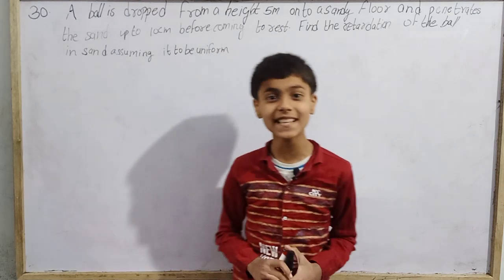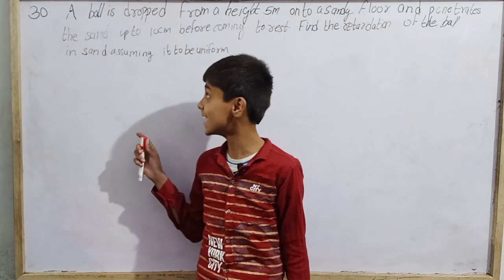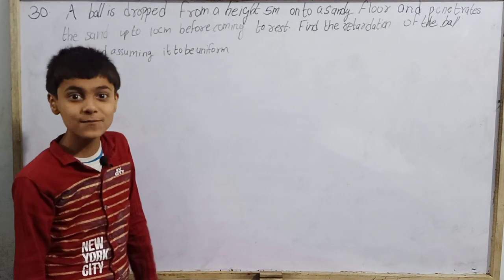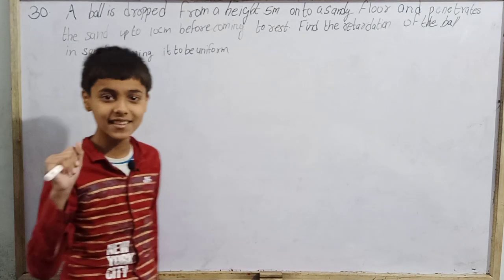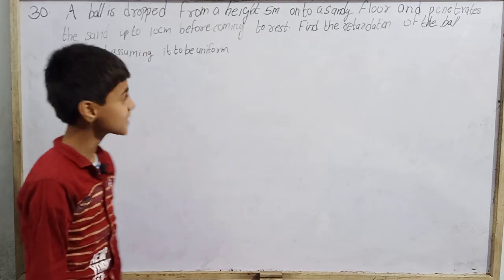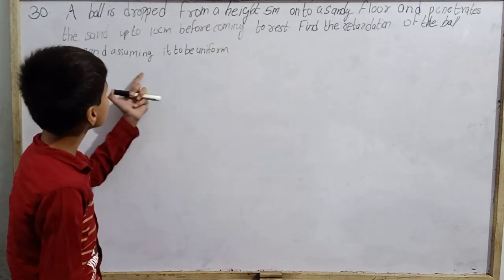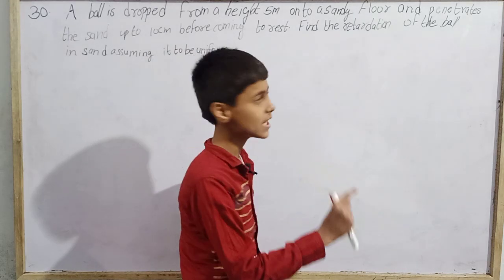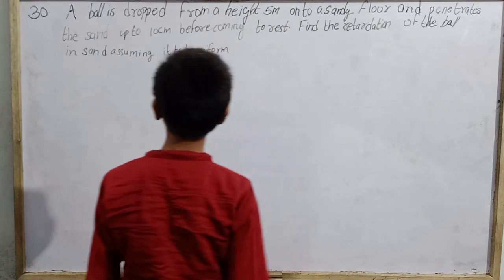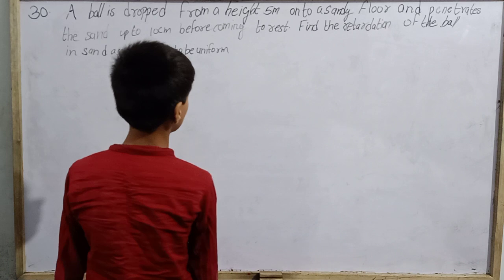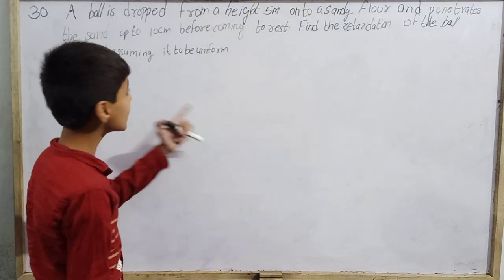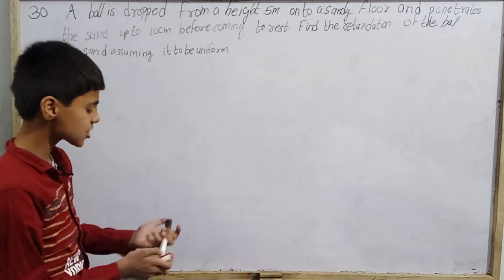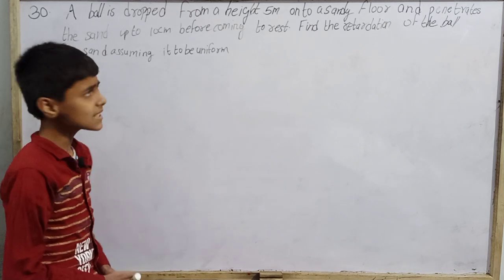Hello everyone and welcome back to SK Wonder Kids. Again we are going to do kinematics in HCV. The first question of the video and the thirtieth question of the exercise: a ball is dropped from a height of 5 meters onto a sandy floor and penetrates the sand up to 10 cm before coming to rest. Find the retardation of the ball in sand assuming it to be uniform.